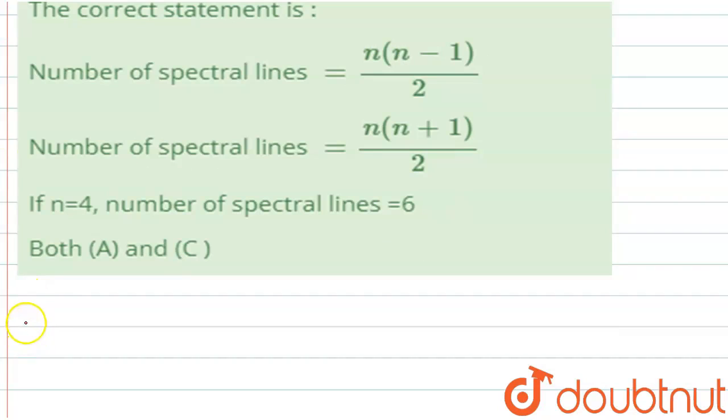Therefore, the number of spectral lines is equal to n1 into n1 minus n2 plus 1, upon 2.